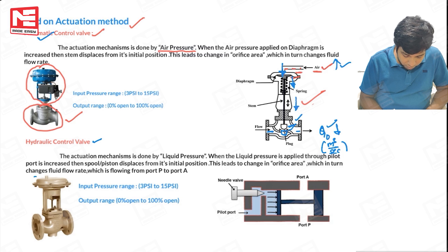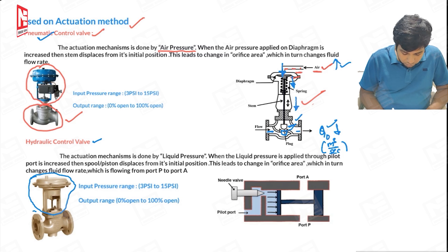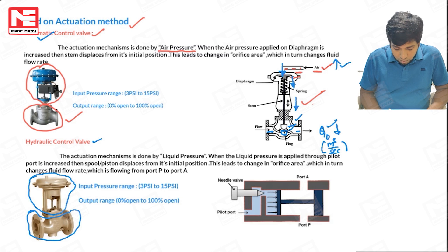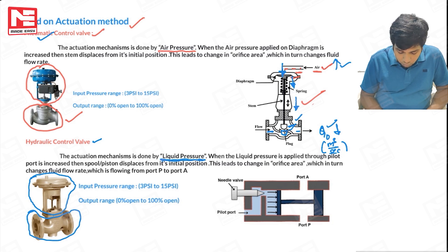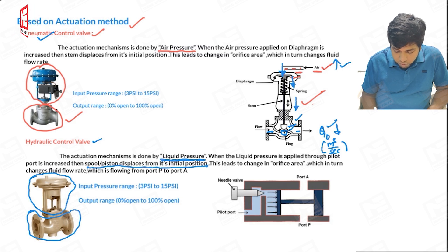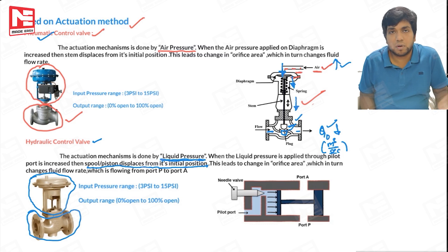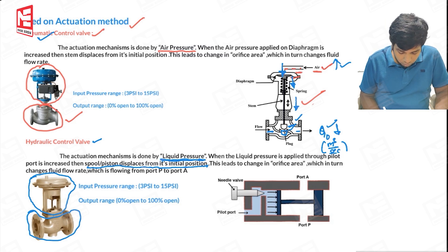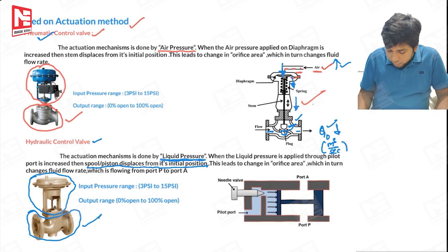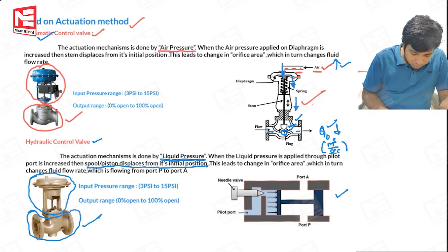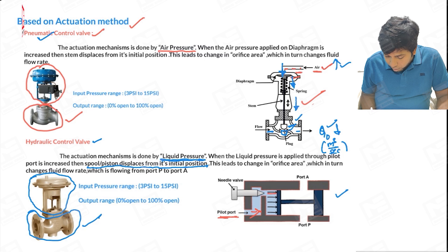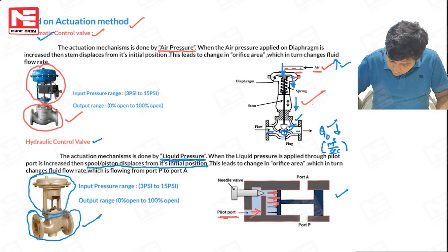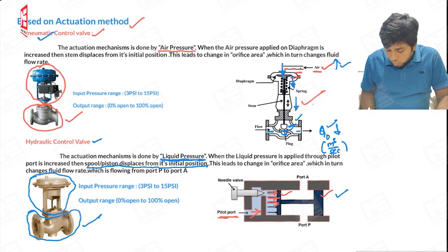The second type is the hydraulic control valve. Again, the upper part is called the actuating body and the lower part is the control valve body. In this case, the actuation mechanism is done by liquid pressure. When liquid pressure is applied through the pilot port and increased, the spool or piston displaces from its initial position, leading to a change in orifice area and naturally a change in flow rate.